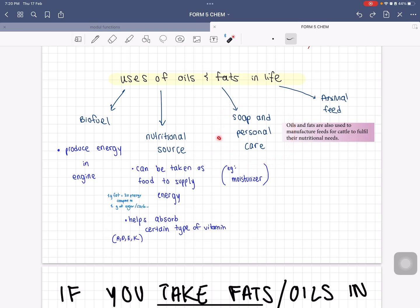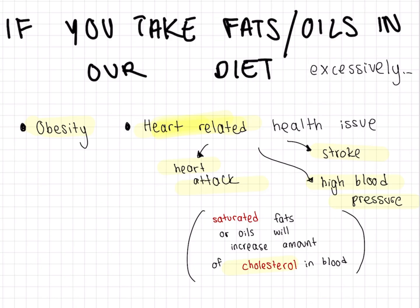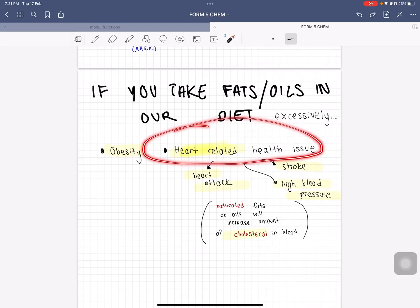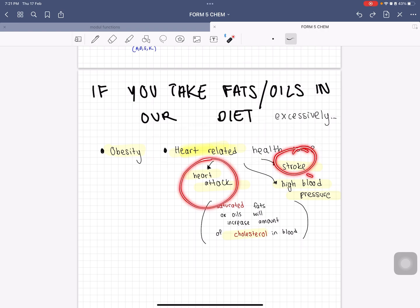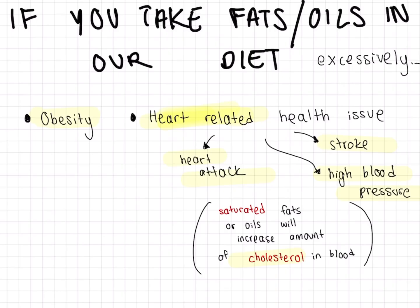Last one is animal feed. The downside if you take fats and oils too excessively in your diet is it can potentially cause obesity, heart-related health issues like heart attacks, stroke, and even high blood pressure. Saturated fats or oils will definitely increase the amount of cholesterol in the blood, but just take note that unsaturated fats are usually way better than saturated fats.